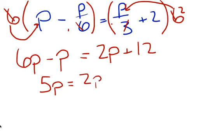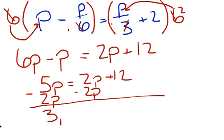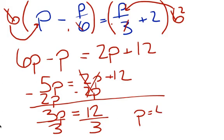I'm going to subtract 2p here and subtract 2p there. That gives me 3p equals 12. Divide this side by 3 and this side by 3, and p is equal to 4. So really all we're doing is going through and getting rid of those fractions, because even though this might seem a little bit complicated, it actually makes things a lot easier.